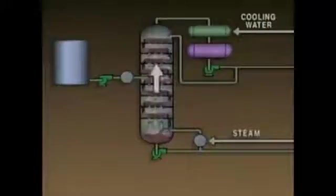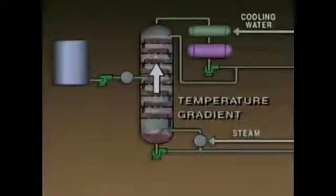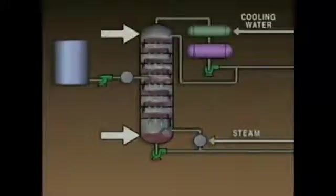While the temperatures at various points in a distillation system are important, the relationships between the temperatures are also important. The temperature decreases as the material moves higher in the tower. The gradual decrease in temperature from the bottom of a distillation tower to the top is called the temperature gradient. The temperature gradient is measured in terms of the difference between the temperature at the bottom of the tower and the temperature at the top of the tower.